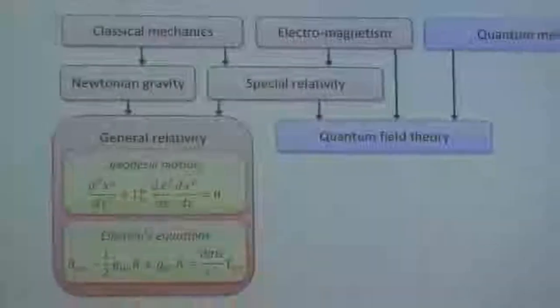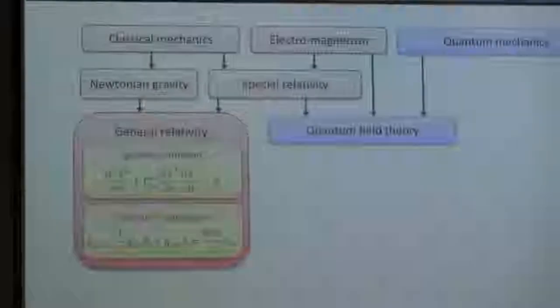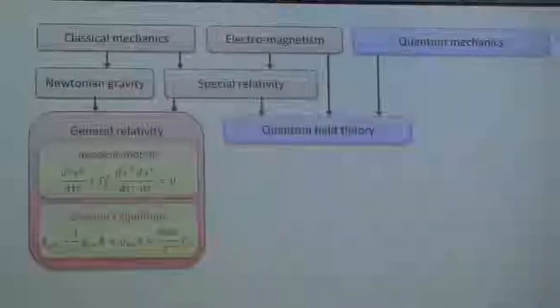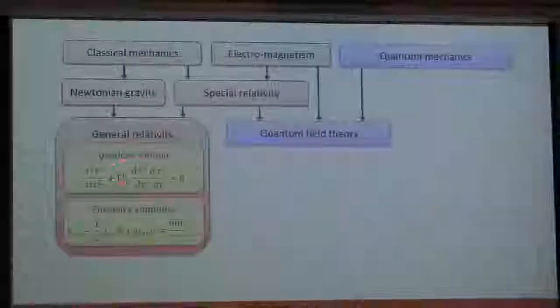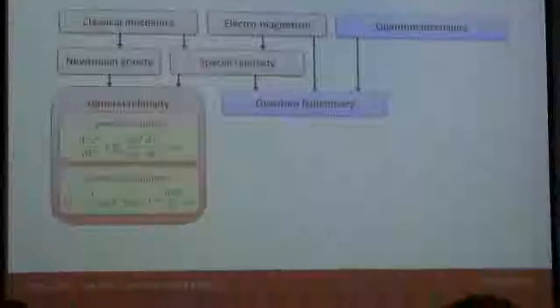One part is the geodesic motion—particles themselves moving on the background spacetime, which is curved. That's one key aspect of general relativity. The geodesic equation generalizes Newton's second law to describe how particles move in the presence of curvature. This curvature is encoded in the Christoffel symbols, which are functions of the gravitational metric. So geodesic motion tells us how test particles—those that don't affect spacetime itself—behave and what the dynamics is in the presence of gravity.